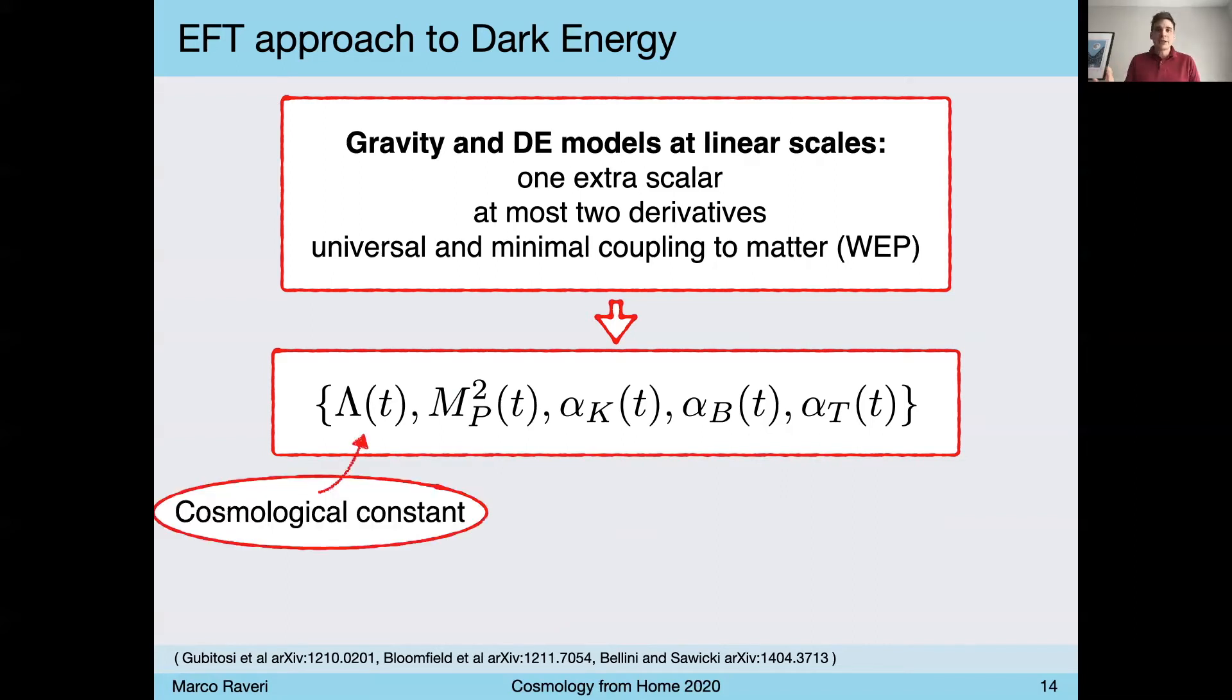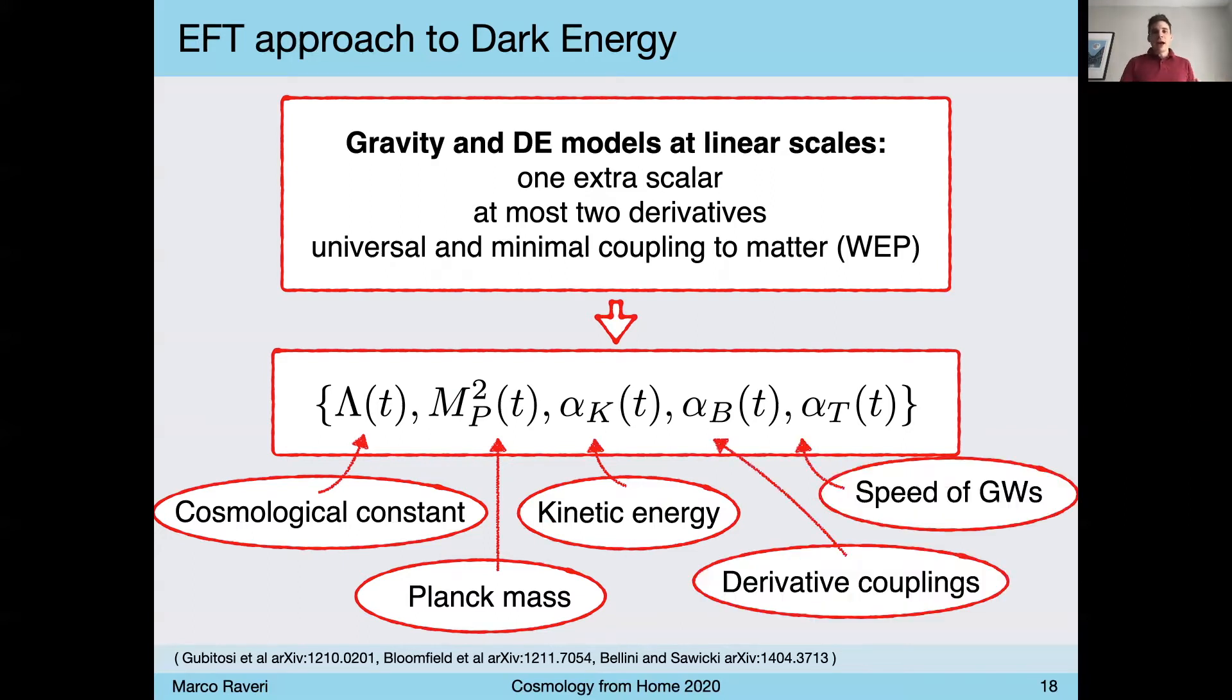Then all models of dark energy and gravity are compressed into five functions of time only. And they are all functions of time because of the broken time symmetry. Perhaps not surprisingly, the cosmological constant that in the standard model is time independent acquires a time dependence. We have a function that's a time dependent Planck mass. And we have other functions that are more related to the physical properties of this extra scalar degree of freedom that we have. It's kinetic energy, it's couplings, and how gravitational waves traveling through the scalar field have a modified dispersion relation.